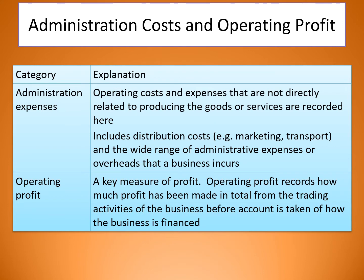Then we have administration expenses: operating costs and expenses not directly related to producing goods or services — things like distribution costs, marketing, transport, and a wide range of overheads. That gives us our key measure of profit — operating profit — which records how much profit has been made in total from the trading activities of the business before taking into account how the business is financed.